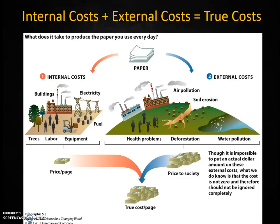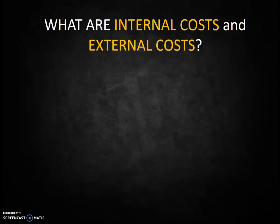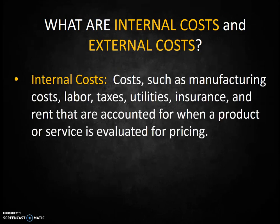So, what do we mean by external costs? Well, let's look. The true costs of a product are the internal costs plus the external costs. Check out Infographics 6.5 from your textbook, and see if you can discern what the difference is between internal costs and external costs. Internal costs are costs that are included in the price — costs such as manufacturing, labor, taxes, utility, insurance, transportation, rent, marketing — all of those things that get put into the price of a product.